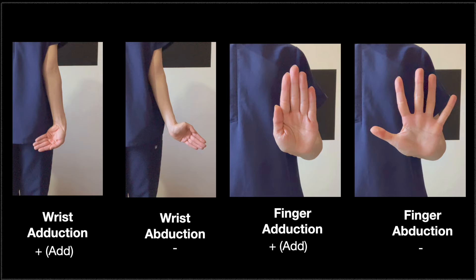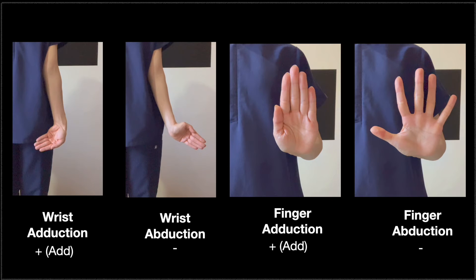For wrist adduction, we're bringing the wrist toward our body. For wrist abduction, the hand is going away from our body. Wrist adduction is also called ulnar deviation, because the ulna is positioned at the same side as the pinky finger — so deviating toward the ulnar side means ulnar deviation. Therefore, wrist abduction is logically called radial deviation, because the radius is at the same side as the thumb.